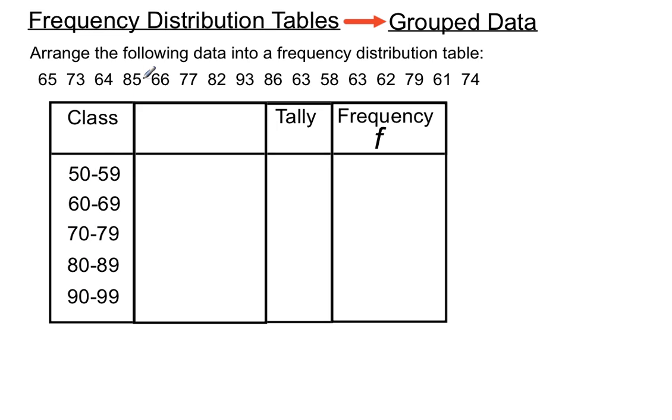So these might be test scores. We might just overall, instead of focusing on individual scores, want to know globally how many people scored in the 50s, how many people scored in the 60s, etc., right up to the 90s, just for a quick overview of how students went in the test. So that might be a reason for doing that.